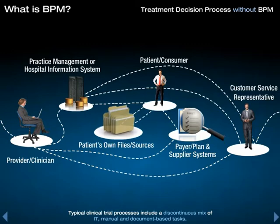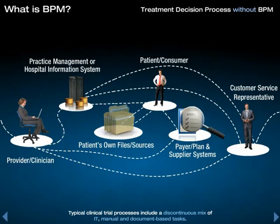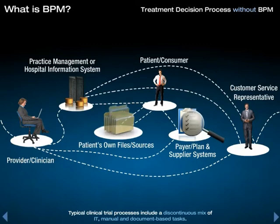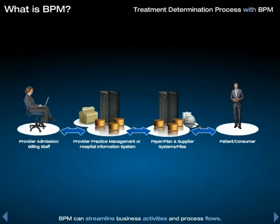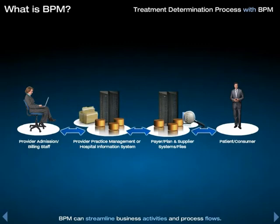For a typical provider treatment decision process, for example, multiple participants and systems may be involved, including those from other providers, ancillary services such as pharmacies and laboratories, third-party administrators, payers or health plans, and suppliers such as pharmaceutical and med biotech firms. BPM from IBM helps to address chronic business process problems by streamlining process activity interoperation, simplifying or eliminating exceptions, and enforcing consistency.